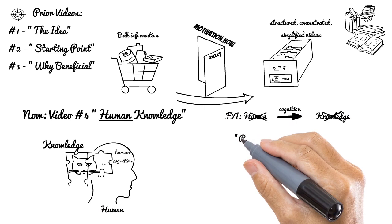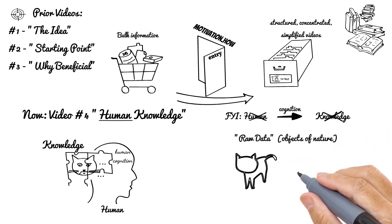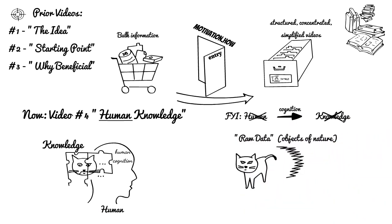There would be just pure raw data like external objects or facts of nature, or in other words, things which actually exist in reality and potentially can be observed.